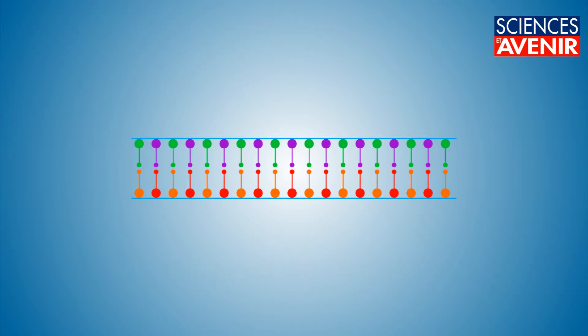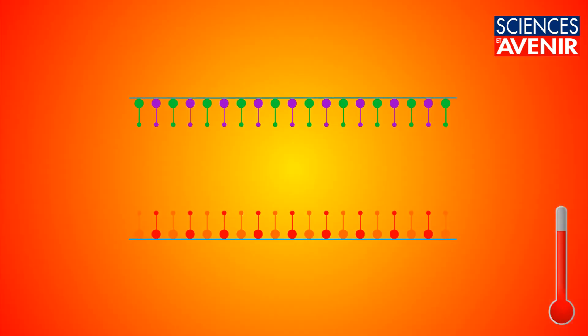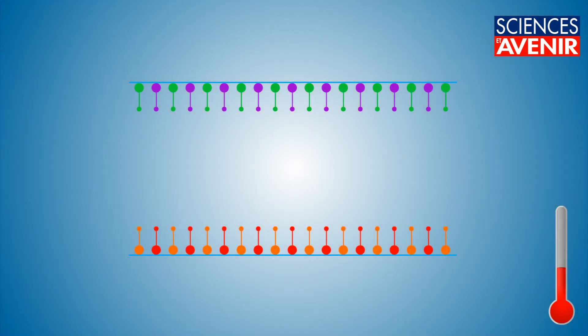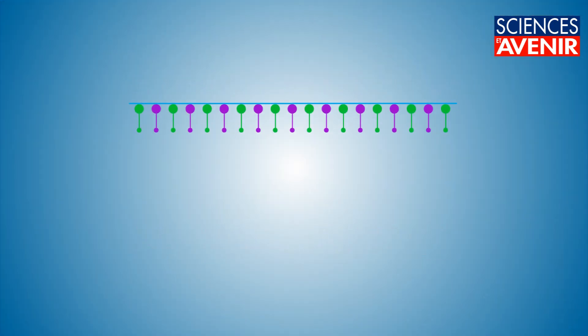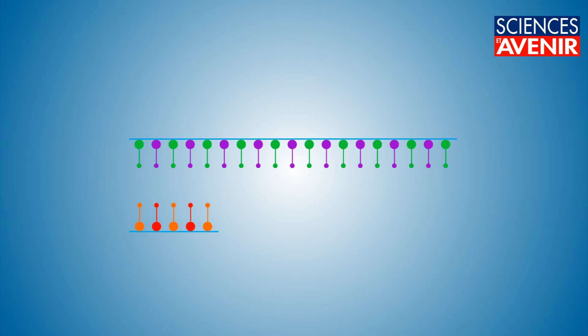This technique consists in heating up the DNA in order to split the two strands of the double helix. DNA fragments, called primers, are added. They consist of a sequence of nucleic acid specifically engineered to bind only with horse DNA.